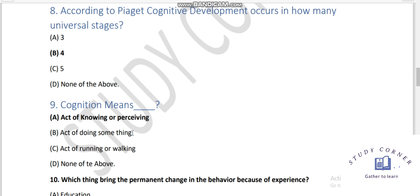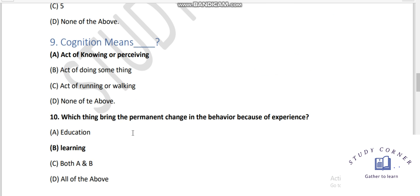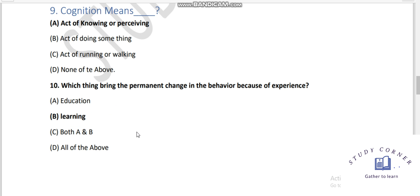Next, we have cognition means. Cognition means that it is the act of knowing and perceiving. Which things bring the permanent change in the behavior because of experience? Of course, it is learning.